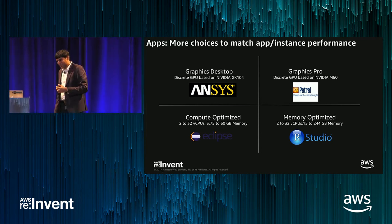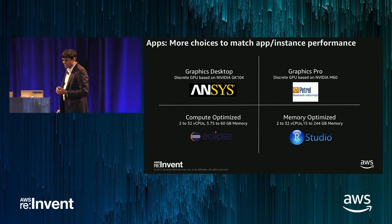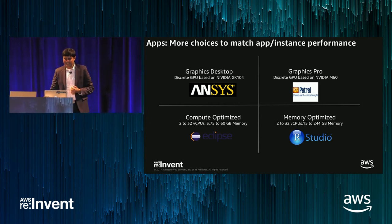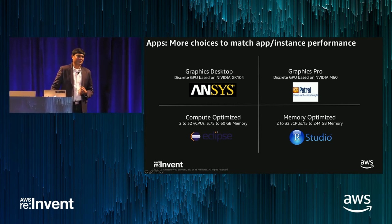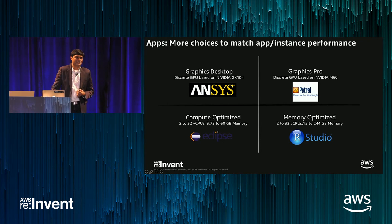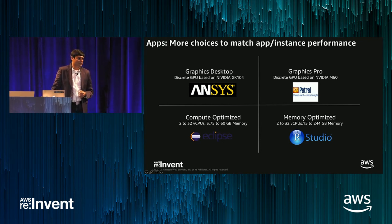There are more options as well: Compute Optimized instances based on popular compute instances on EC2, and Memory Optimized instances where apps require or can benefit from a large amount of memory.